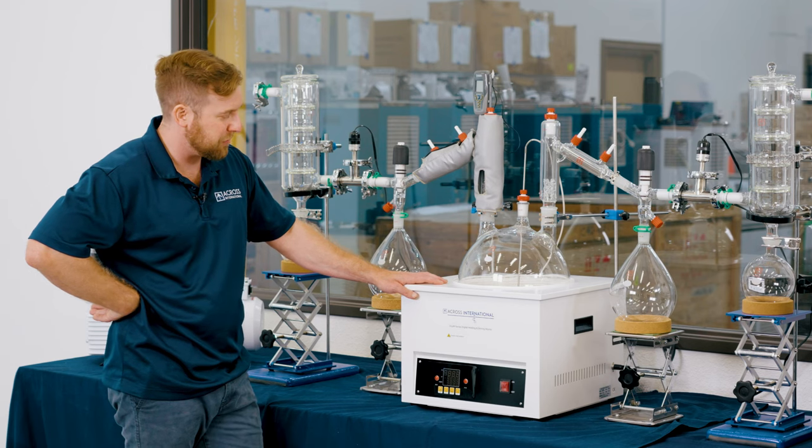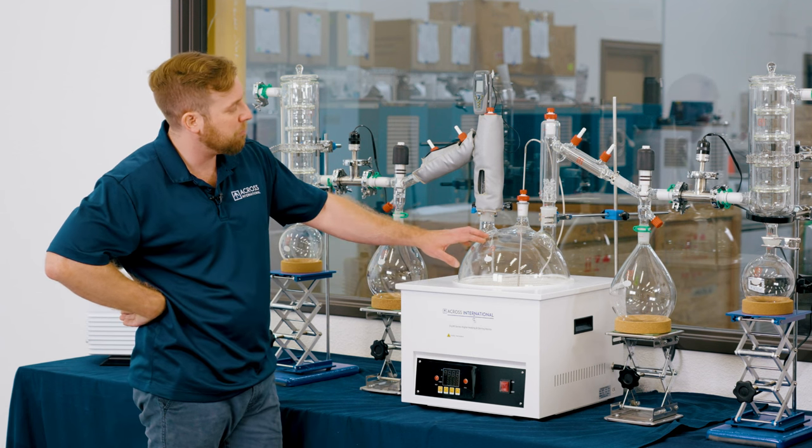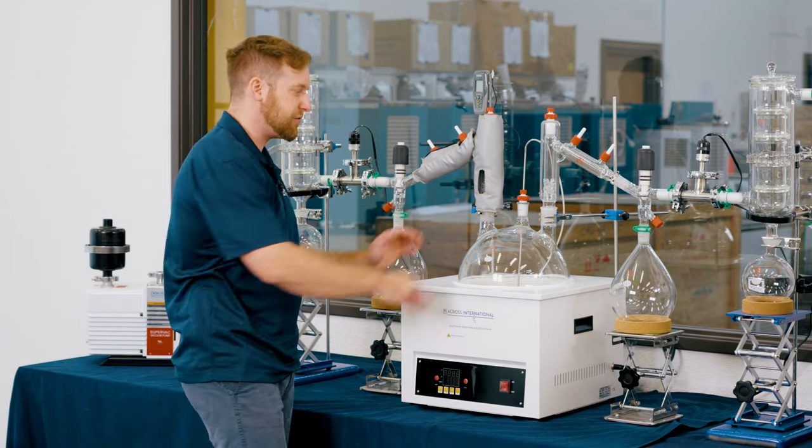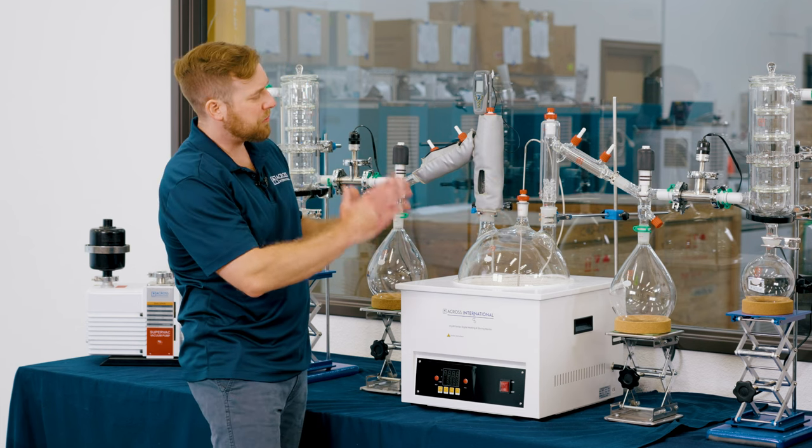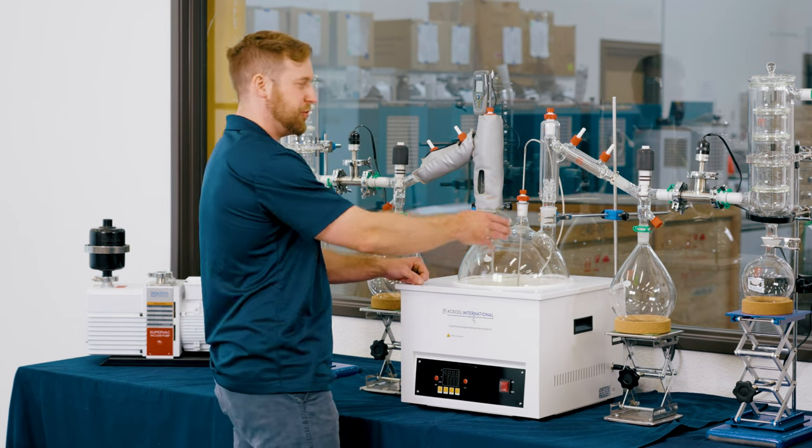From our ULCSA certified heating mantle, we move to the boiling flask. Here we have a 10-liter boiling flask with two necks. From our boiling flask, we're going to move up to our condensers.